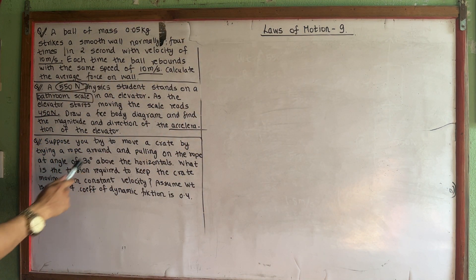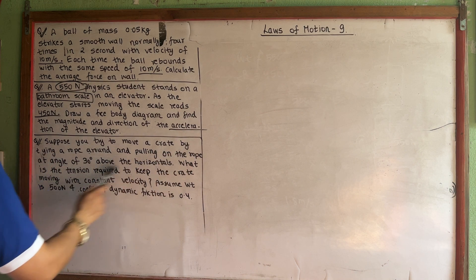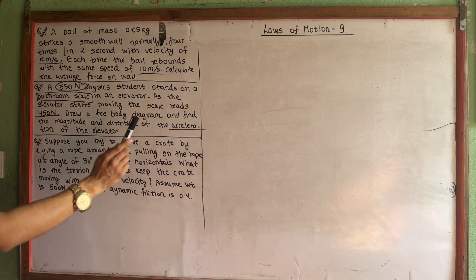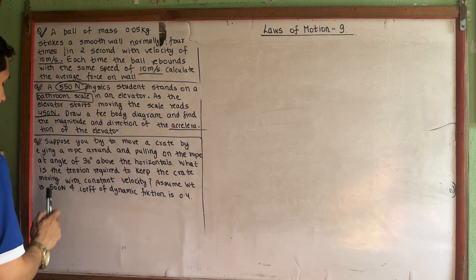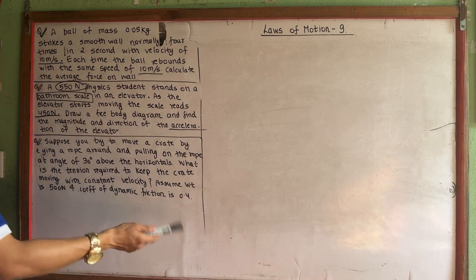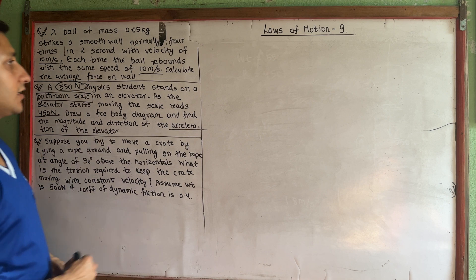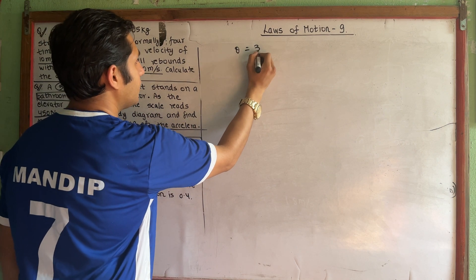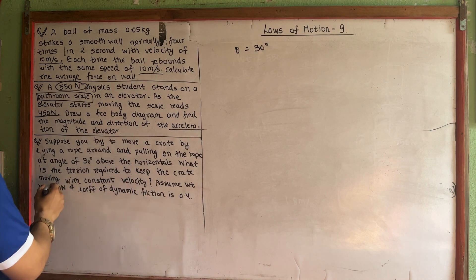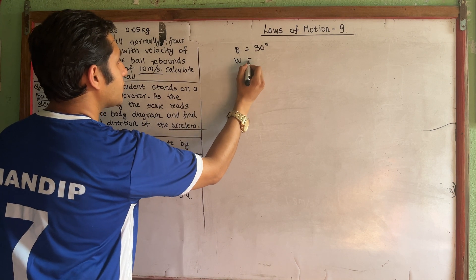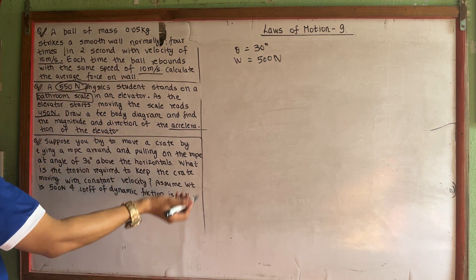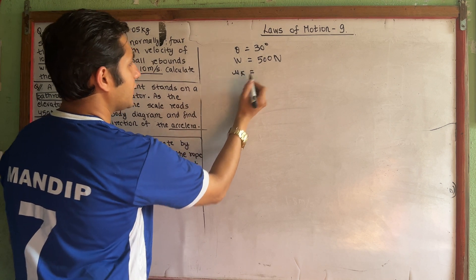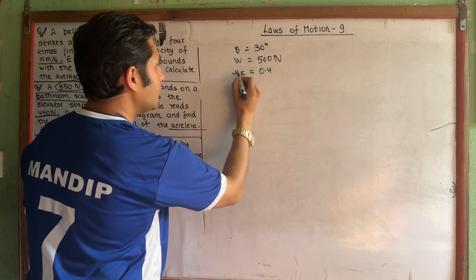Suppose you try to move a crate by tying a rope around it and pulling on the rope at an angle of 30 degrees above the horizontal. What is the tension required to keep the crate moving with constant velocity? Assume weight of 500 Newton, coefficient of dynamic friction is 0.4.